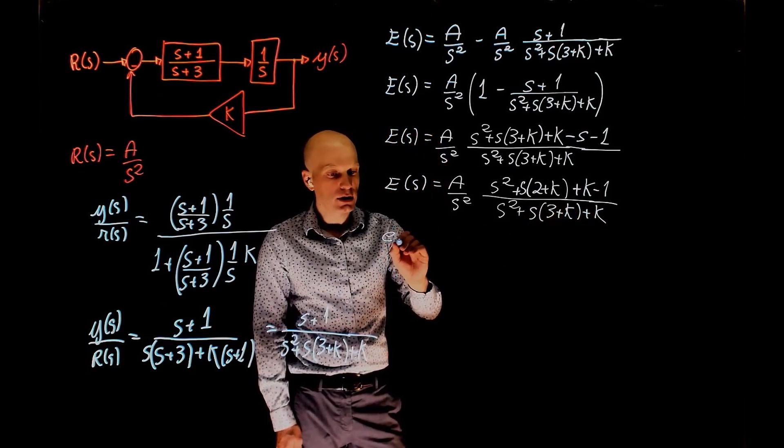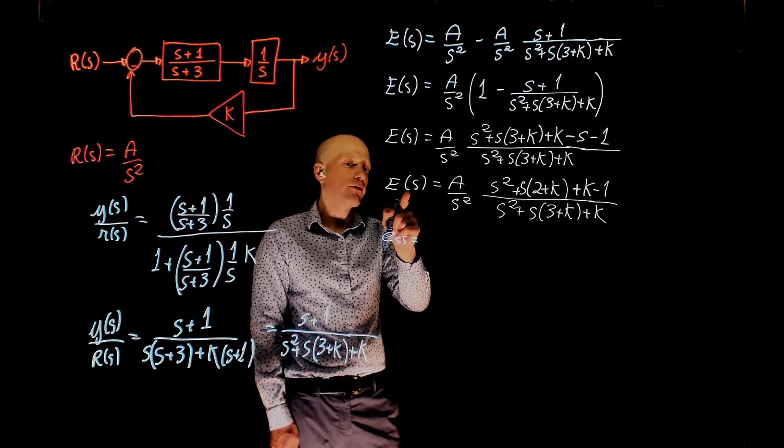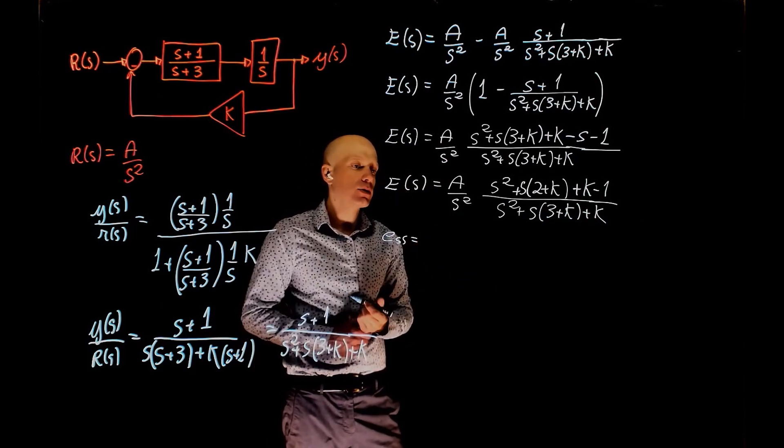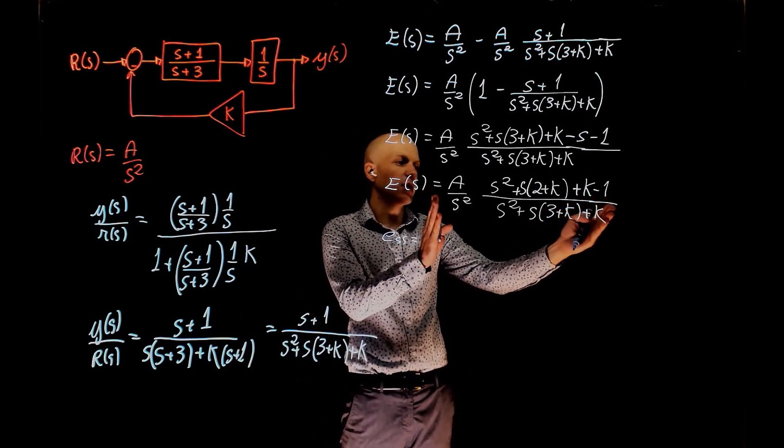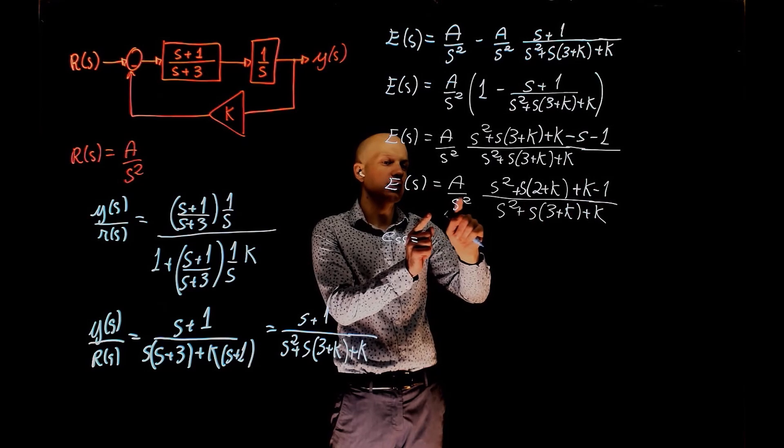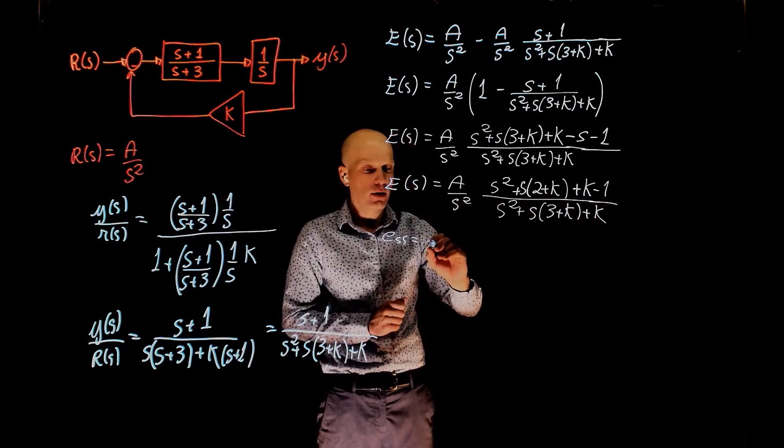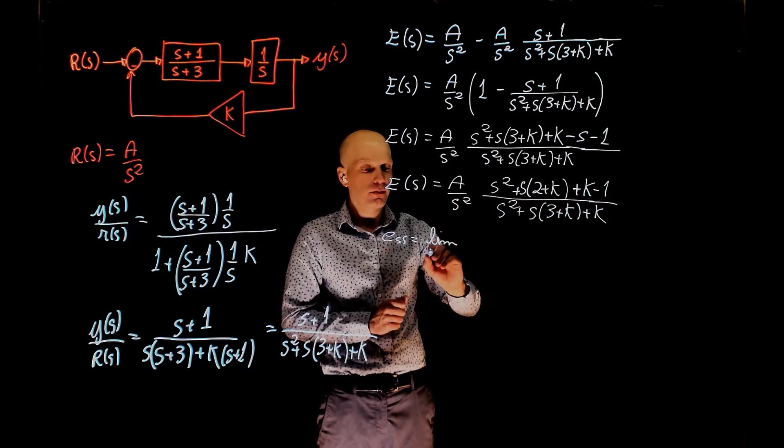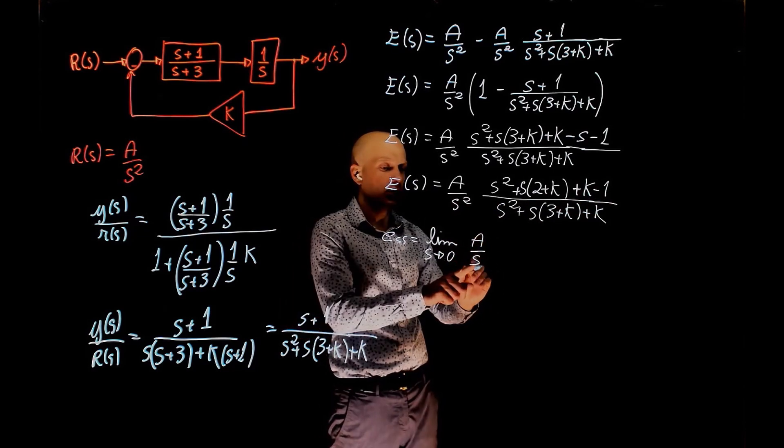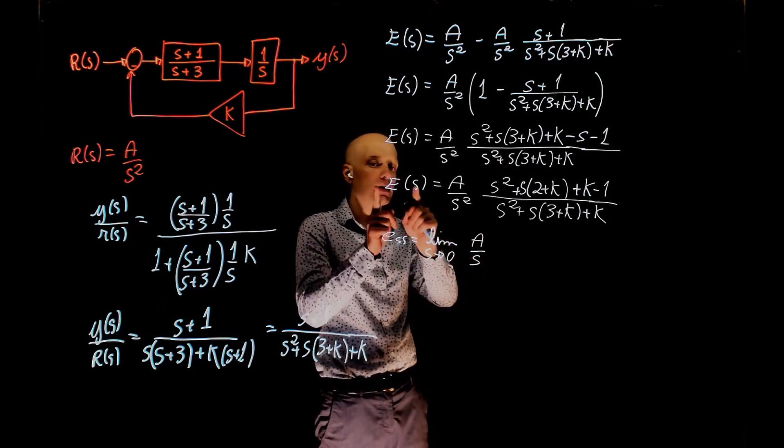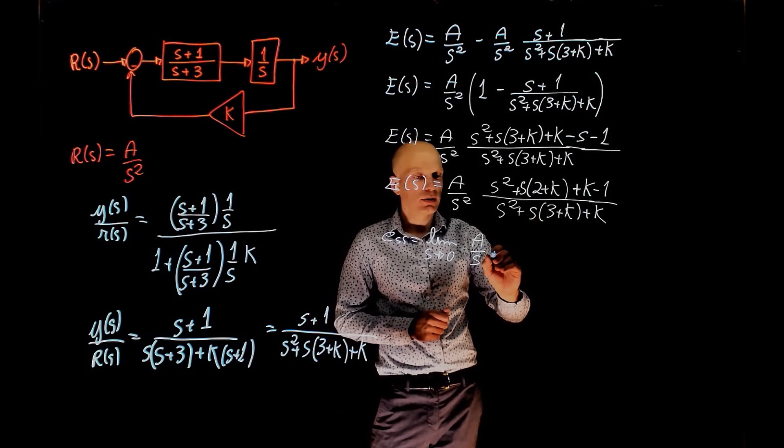Now the error in steady state is the limit when e of s times s tends to 0. So e of s times s is this function times s, so this s squared, one of the s cancels, so you have the limit when s tends to 0 of a over s, not s squared again, because the theorem is e times s, times the function.